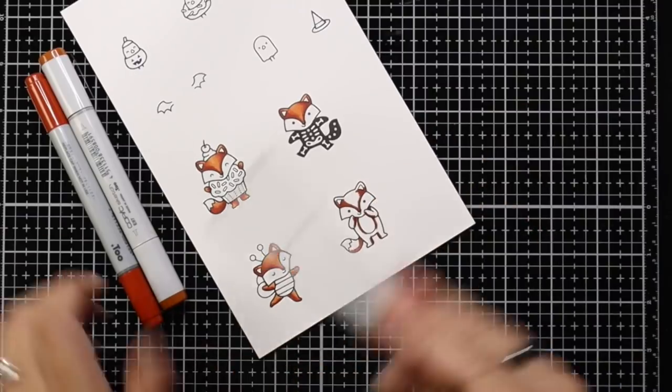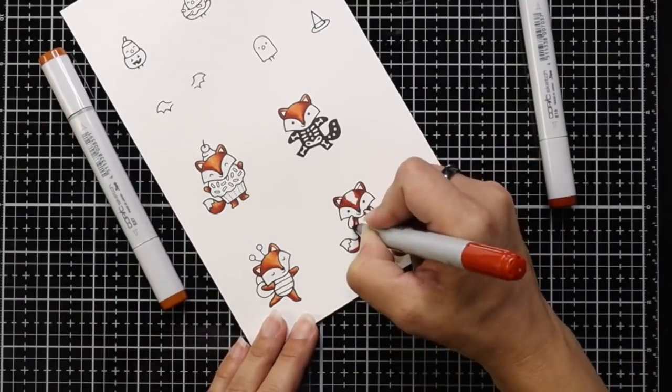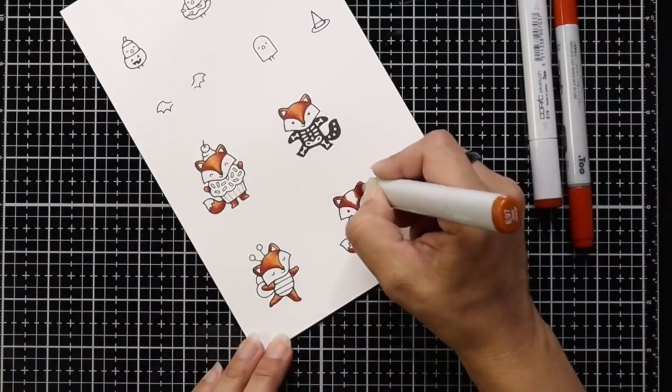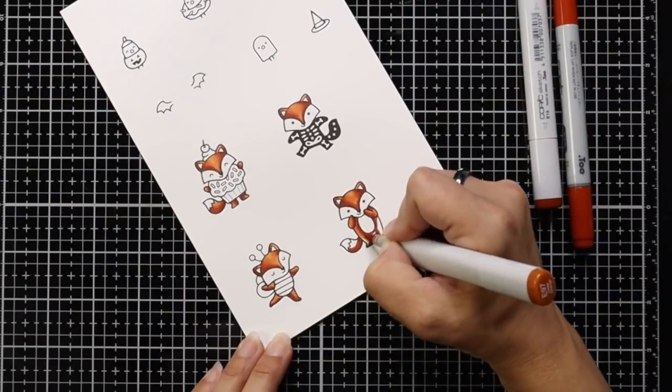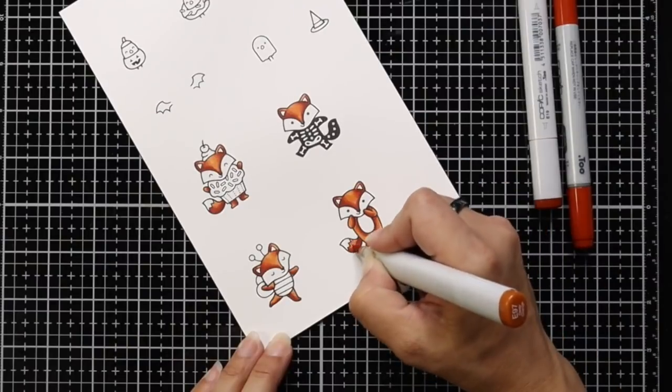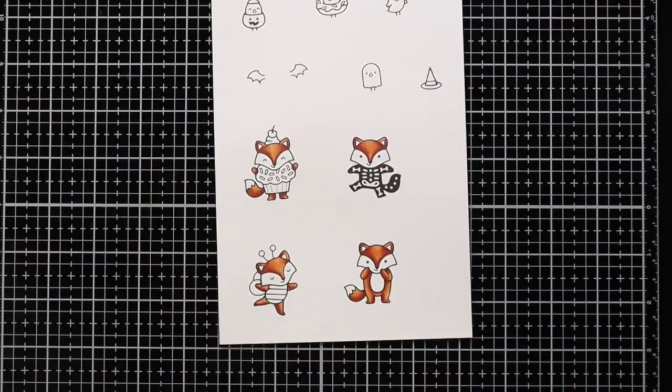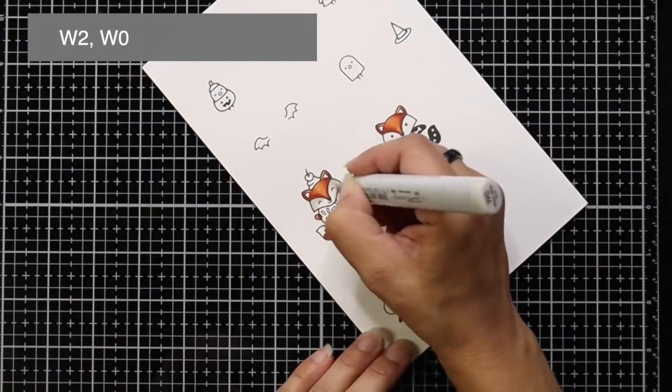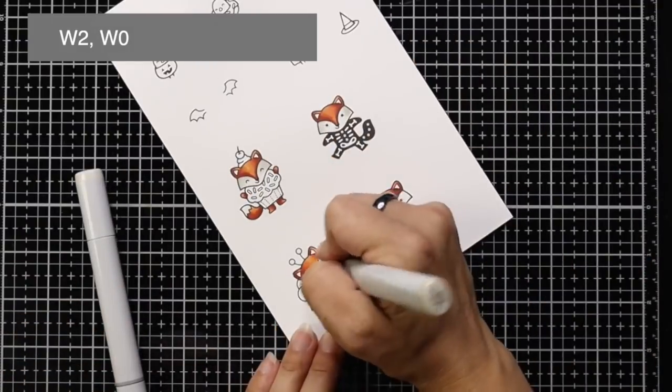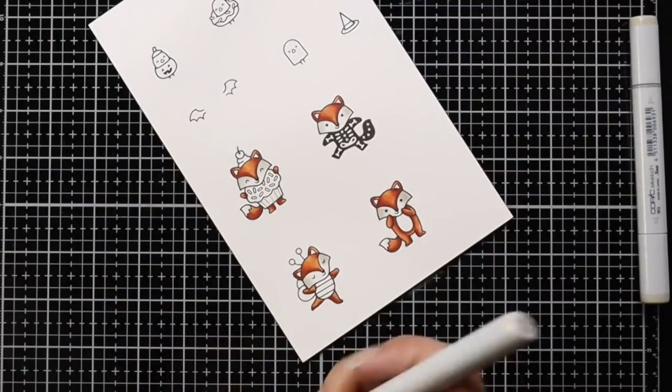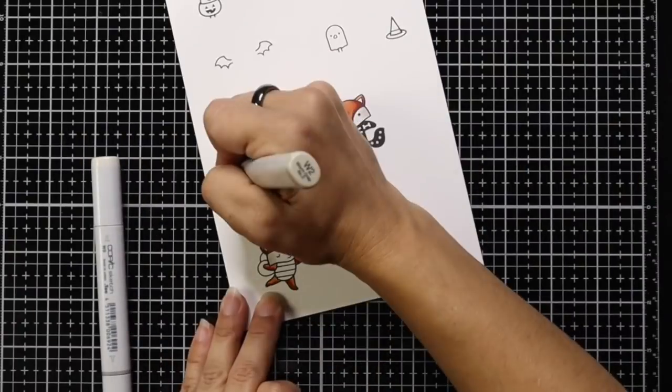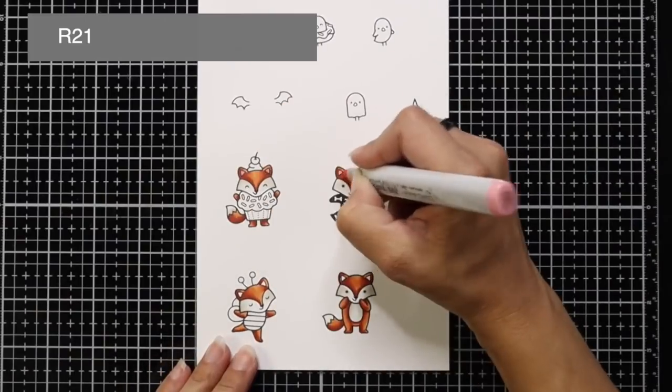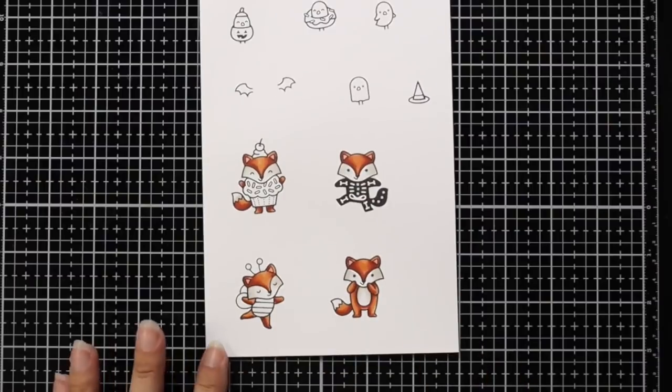And on this one with the belly, I added the darkest color closest to its belly and blend it out. After I have all of their bodies colored in, I'm going to work on the face, and I'm going to use a W2 and a W0 to do that. I'm just going to start with the W2, add little flicks from each side going in, and then blending out with the W0. Then I'll bring in an R21 to add little dabs of pink to the inside of their ears.